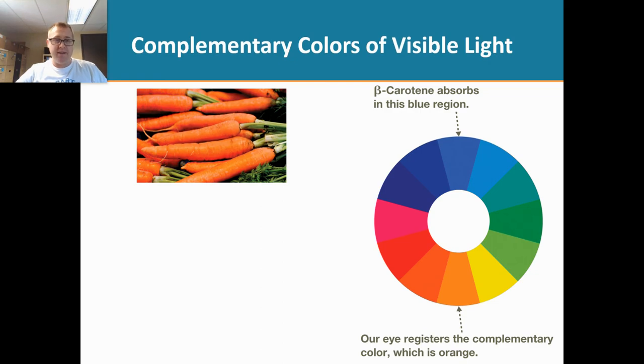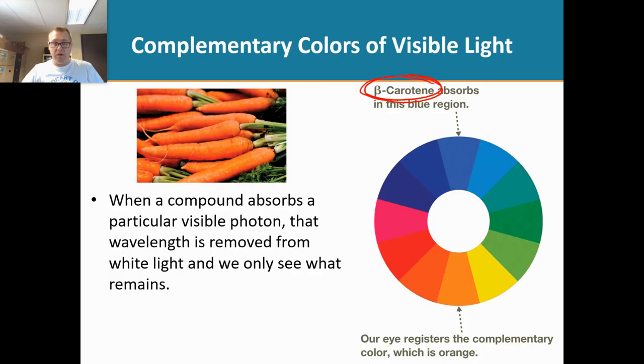So we have carrots here. We see that they're orange. There's a molecule in carrots called beta-carotene. And it's a molecule with conjugated double bonds throughout it. So when the molecules in the carrots absorb a particular photon, that wavelength is going to be removed from the white light. So white light is shining on the carrot and that carrot is going to absorb a photon of light and what happens in this particular case is that the carrots are going to absorb blue light. So if blue light is absorbed then that means that everything else remains. And what our eyes register,